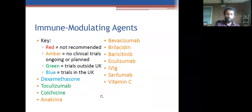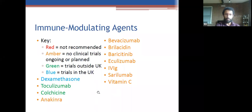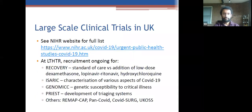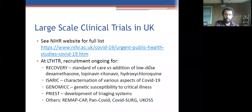Immune-modulating agents: there are many being tested, with more being added since this was last updated in April. These give an idea of agents being evaluated, many of which are now being tested in the UK. Similarly, many different antivirals are being tested. The complete list of clinical trials is on the NIHR website — worth looking at to see what's going on. Some of these trials are releasing early results, particularly the larger ones, as we've seen with the recovery trial.